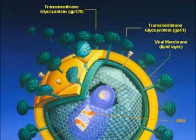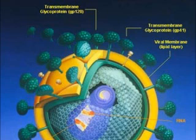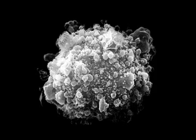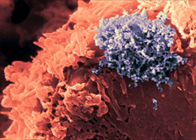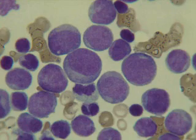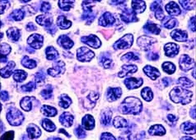Complete ERVs are recombined, mutated, and methylated into junk. When they regain some semblance of functionality, they cause disease, which is no surprise as exogenous retroviruses like human immunodeficiency virus and human T-lymphotropic virus cause acquired immunodeficiency syndrome, leukemia, lymphomas, and various other autoimmune diseases.